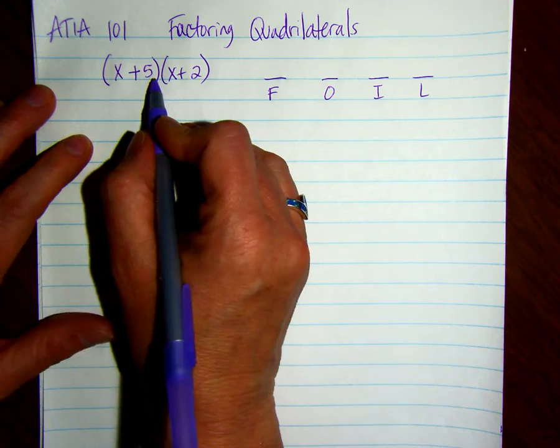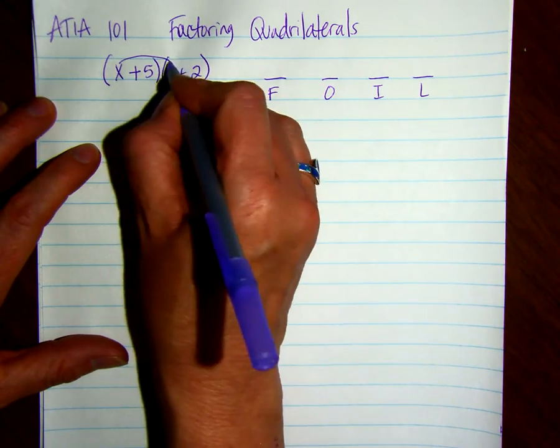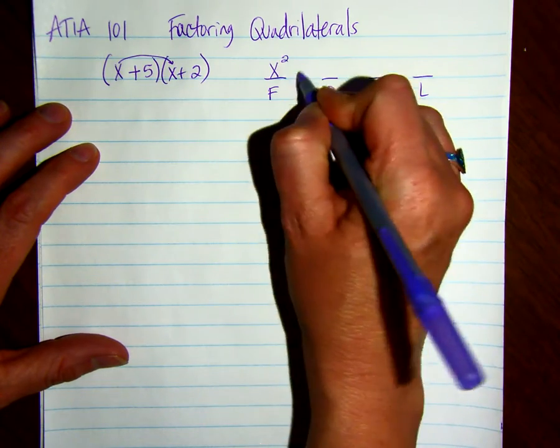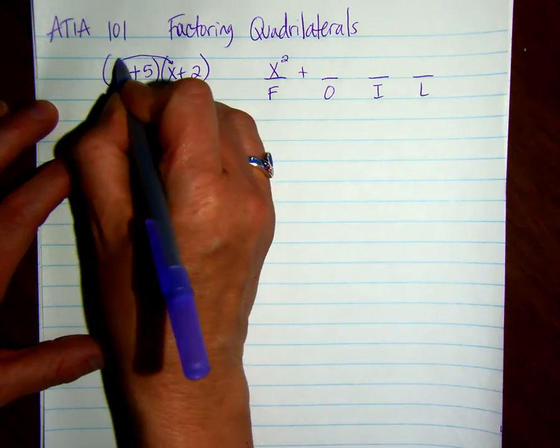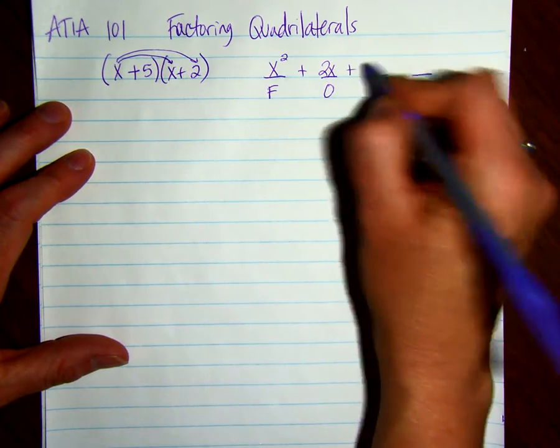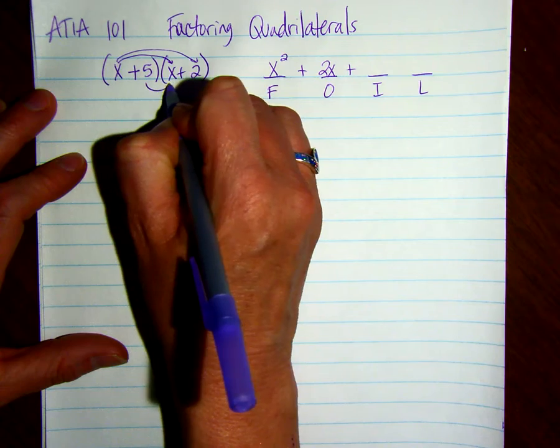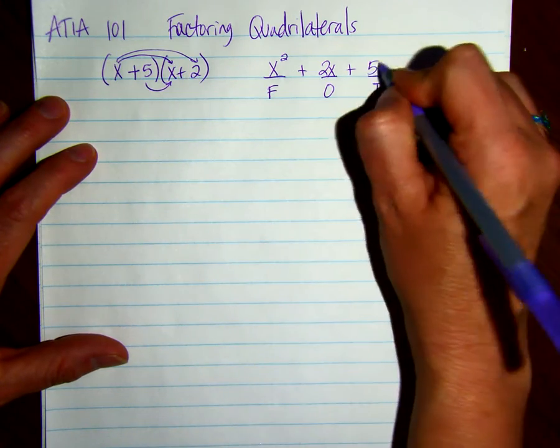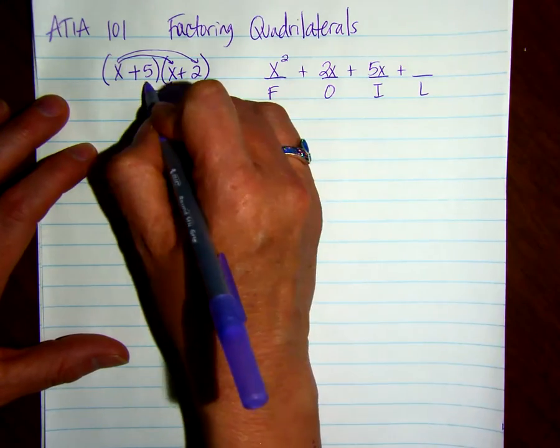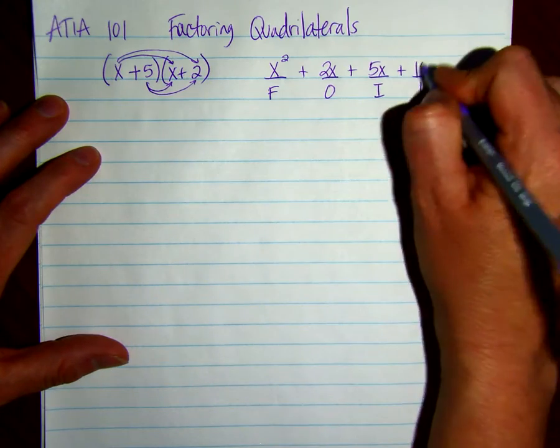Let's remind you. So the first is x times x, so that's x squared. Then we add the outsides, which is x times 2, 2x. Then we add the insides, which is 5 times x. And then we add the last two, 5 times 2, which is 10.